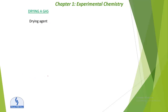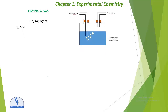For drying a gas, a drying agent is needed. There are three types of drying agent: acid, salt, or alkali. If using an acid drying agent, we use concentrated sulfuric acid. It is used for chlorine gas and hydrochloric acid, but not for ammonia because it reacts with ammonia.